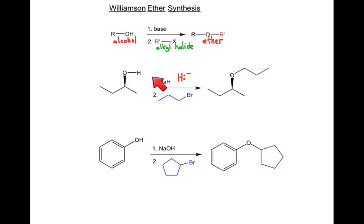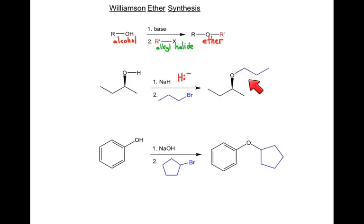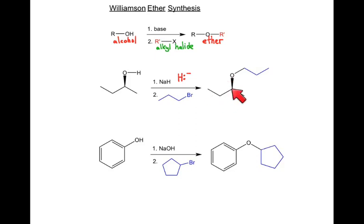What we're doing overall is simply replacing this H with a three-carbon group — one, two, three. Another important thing to note here is that the stereochemistry from the carbon to the oxygen is retained. So if in this case this is a wedge, we also keep that wedge in the product. The stereochemistry is retained as we go from the functional group of an alcohol to an ether.